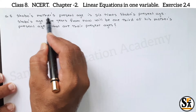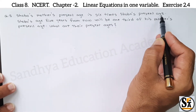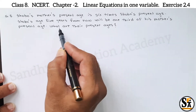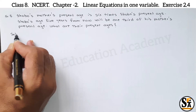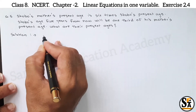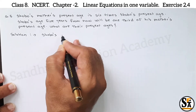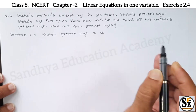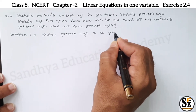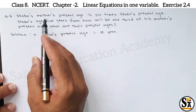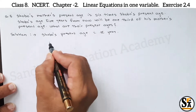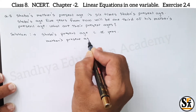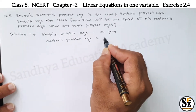Now see question number 5. Sobo's mother's present age is 6 times Sobo's present age. Sobo's age 5 years from now will be one third of his mother's present age. What are their present ages? Let's start our solution. We will assume Sobo's present age as X years. Then what will be the mother's present age? It is 6 times, so mother's present age is 6X years.